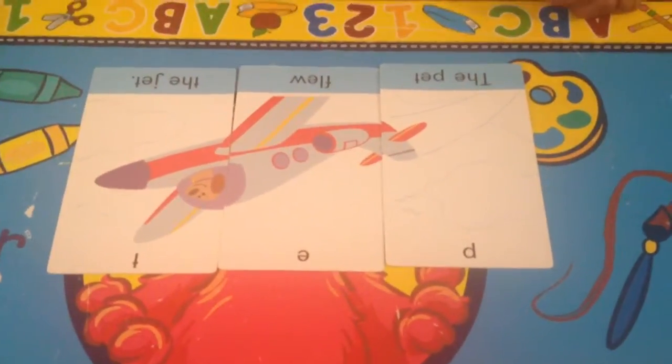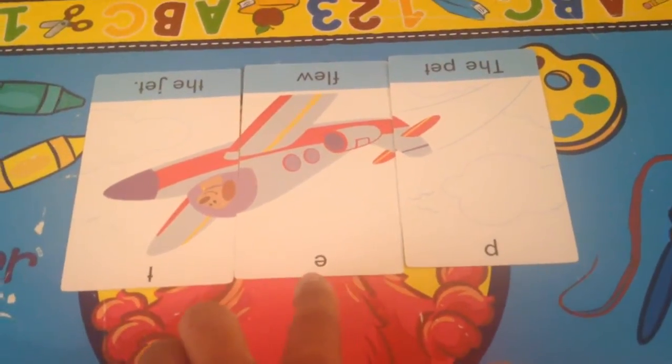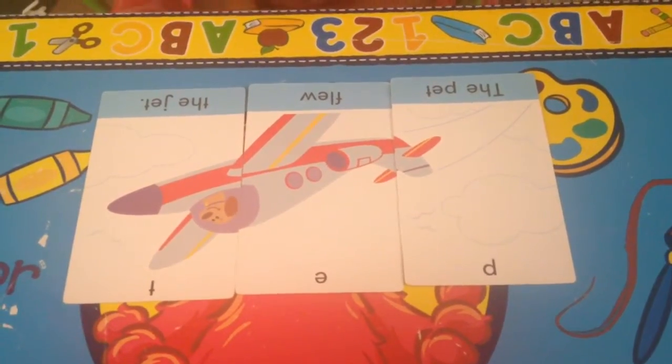So today, Aniyah and I are doing sight words and spelling words. Aniyah, what word is this? P-E-T. And what does that spell? Pet.